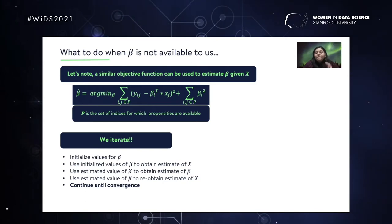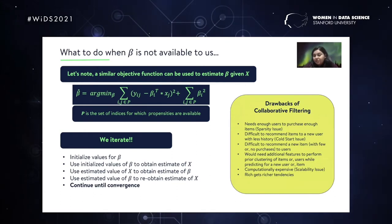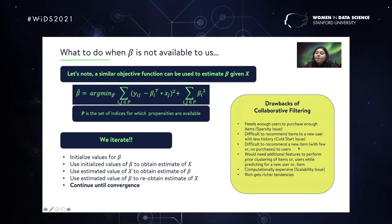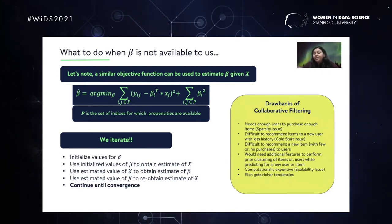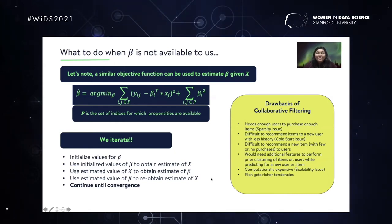Now let's look at the drawbacks of collaborative filtering. The first is the sparsity issue — since collaborative filtering is close to linear regression, you need enough response variance in Y. If your user-item interaction matrix is sparse, that's a problem. The second is the cold start problem: if a user is relatively new to the system and lacks historical propensity data, it is very difficult to make recommendations to them. There are also scalability issues — this iterative process is by no means computationally inexpensive. All these drawbacks can be addressed, but we won't have time to go into that in this session.